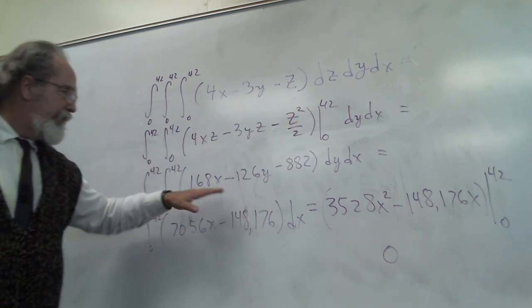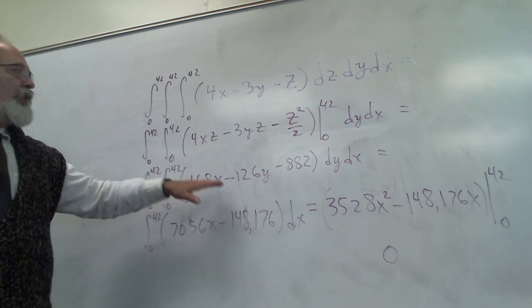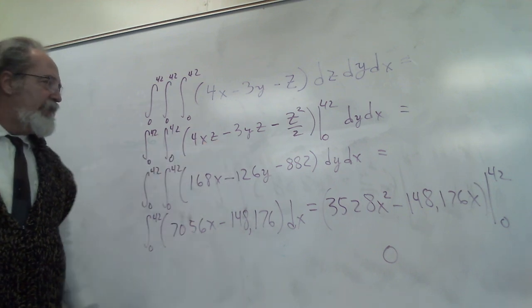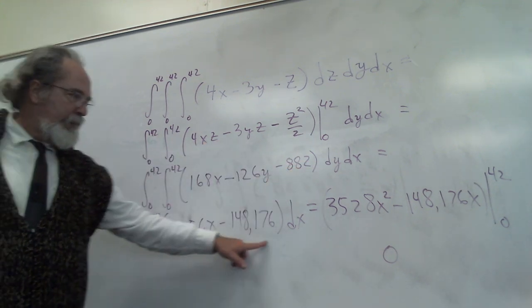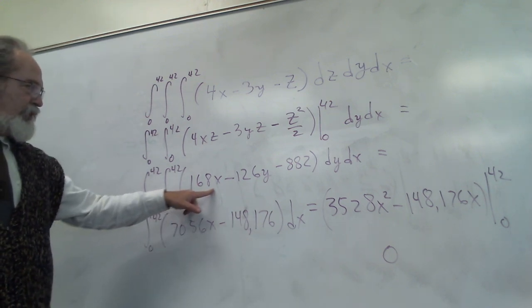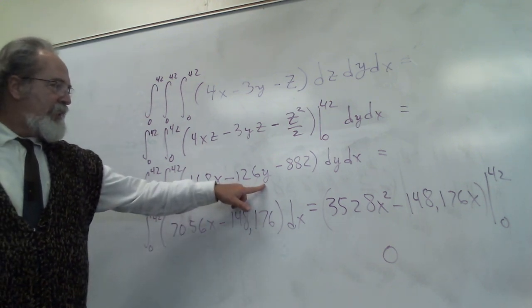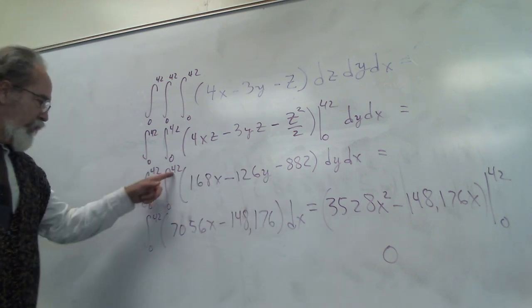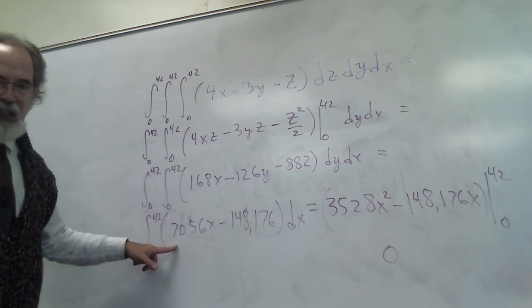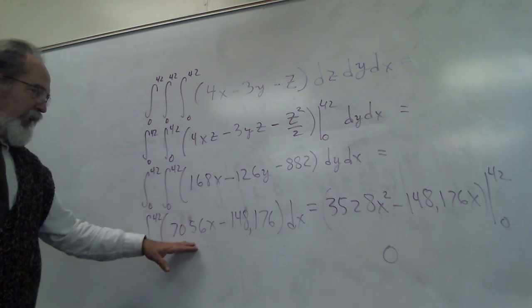I put in the 0 to 42 and evaluate, so the x lives, the y lives. Now I'm going to do a dy. So here's what I did with the y. This becomes 168xy minus 63y squared minus 882y. Put in 0 to 42. Here's how the numbers shake down, calculator stuff.